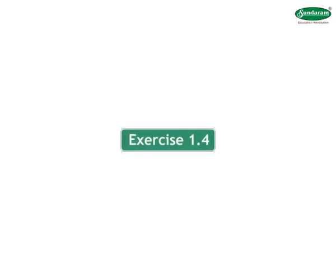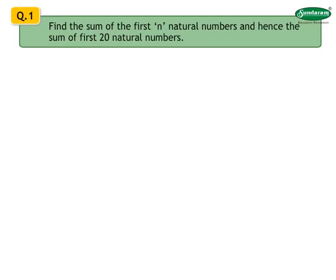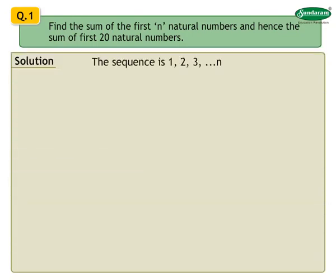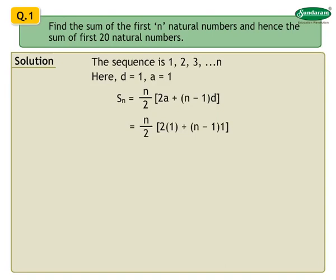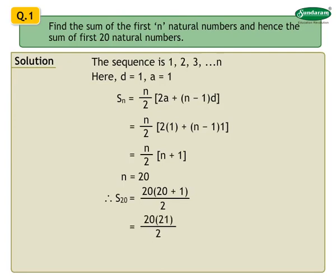Let us solve Exercise 1.4, Number 1: Find the sum of the first n natural numbers and hence the sum of the first 20 natural numbers. Solution: The sequence is 1, 2, 3, up to n. Here A equals 1, D equals 1. We have Sn equals n/2 into [2a + (n−1)d] equals n/2 into [2 + (n−1)] equals n/2 into (n+1). For n equals 20, S20 equals 20 × 21 / 2 equals 210.